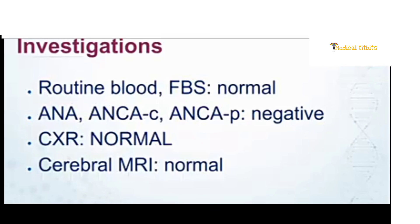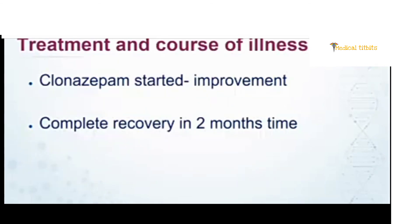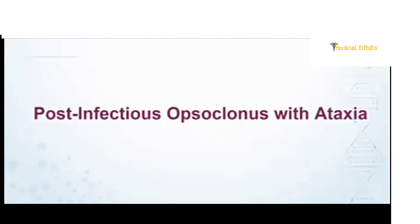Routine blood work and MRI were normal. The patient was given clonazepam and made a full recovery within two months. The diagnosis was post-infectious opsoclonus-ataxia syndrome — after a viral infection, patients can develop this funny eye movement with cerebellar ataxia. This is called post-viral cerebellitis with opsoclonus, and these patients do recover.